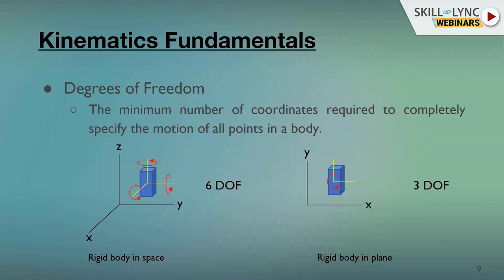A rigid body is defined as a body in which the distance between any two points A and B inside it does not change with time, even when the body is in motion. In Theory of Machines we mostly consider rigid bodies and don't consider deformation. Ideally no body in nature is exactly rigid — all bodies deform to some extent — but deformation is almost negligible, so every link or body in a mechanism is treated as a rigid body.